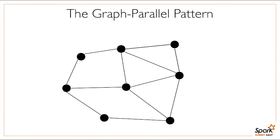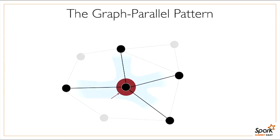All of these graph algorithms can be expressed using the same pattern of computation: to calculate the value for a particular vertex—something like the rank, the number of triangles passing through it, or the feature for that vertex—you only need to access the neighboring vertices and edges. These algorithms may do this multiple times, but in each iteration only that vertex's neighborhood is accessed. This means these algorithms can be expressed as independent operations on each vertex and its neighbors, allowing them to run in parallel and scale to large graphs.